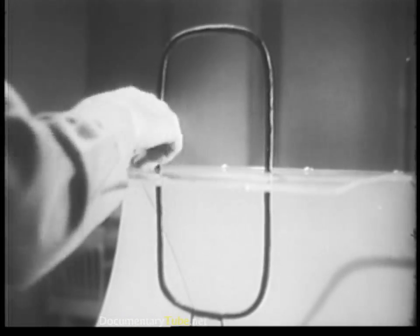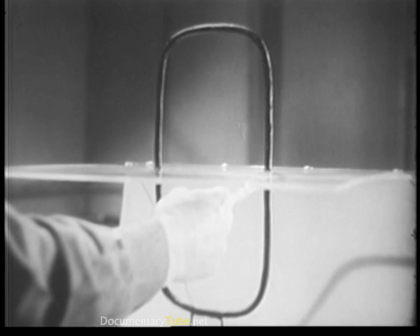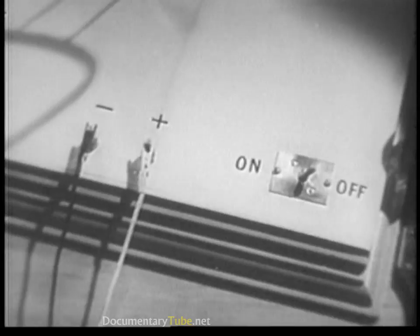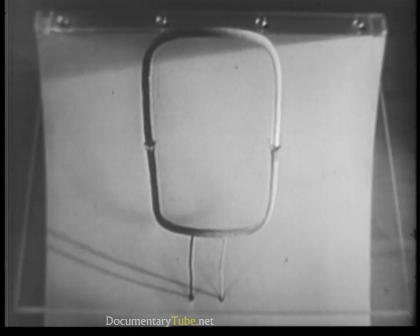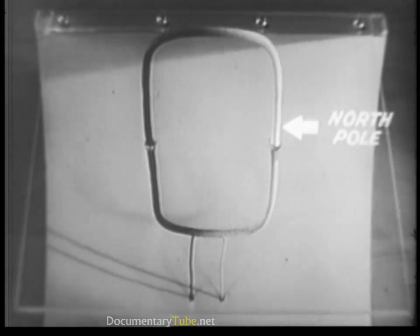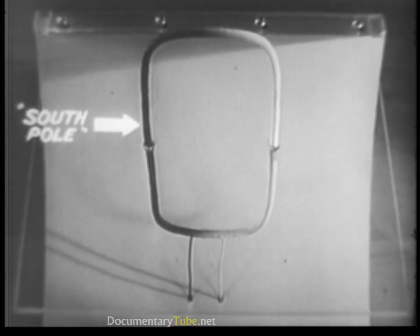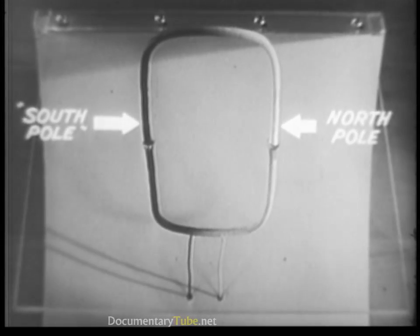Now when a conductor is formed into a loop and current flows through it, the loop itself becomes in effect a magnet and is known as an electromagnet. With the aid of iron filings, we are now able to see the pattern of the magnetic field. Like all other magnets, this one also has a north and south pole. Which is the north and which is the south is determined by the direction of the current.